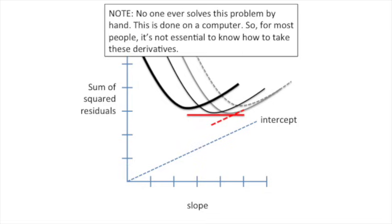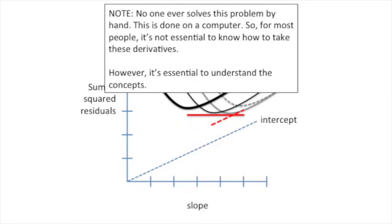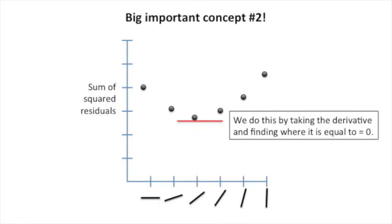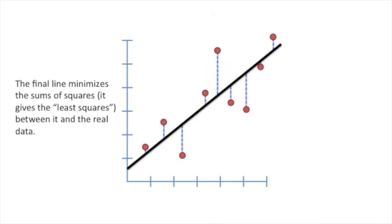Note, no one ever solves this problem by hand. This is done on a computer. So for most people, it's not essential to know how to take these derivatives. However, it's essential to understand the concepts. Big important concept number one: we want to minimize the square of the distance between the observed values and the line. Big important concept number two: we do this by taking the derivative and finding where it is equal to zero. The final line minimizes the sums of squares. It gives the least squares between it and the real data.